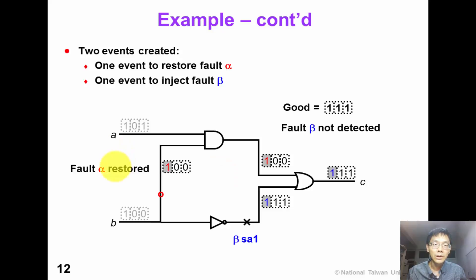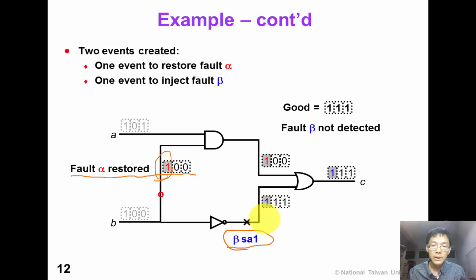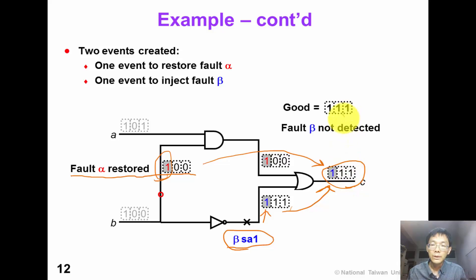Now consider restoring fault alpha from the previous slide. We create an event here to undo fault alpha, and inject another fault beta, stuck-at-1. We create a new event, and these two events propagate to the output. The output is now 1-1-1, which is identical to the good output, so fault beta is not detected.